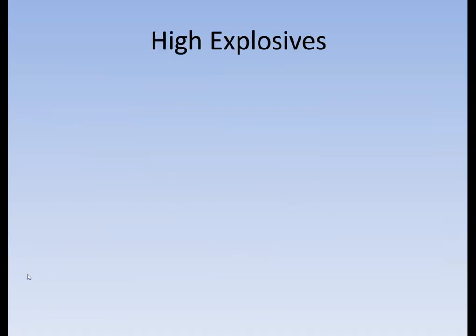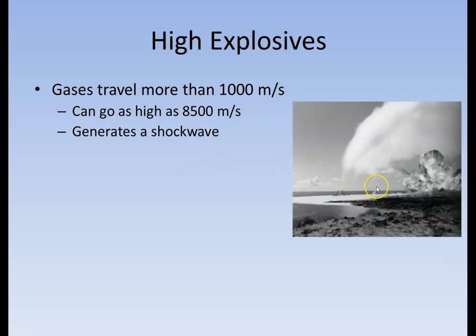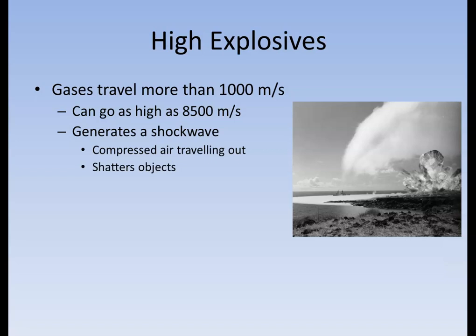Now let's talk about high explosives. High explosives are different — the gases travel over 1,000 meters per second, and some can reach as high as 8,500 meters per second. That's where the damage is caused. This creates a true shock wave. You can see the shock wave pushing outwards, the air being blown, and water being pushed out because the gas gets so compressed and forced outward that it pushes things along with it. This compressed air from the explosion travels outward and can go so fast and hard that it can actually break objects, blow out windows, and damage buildings.